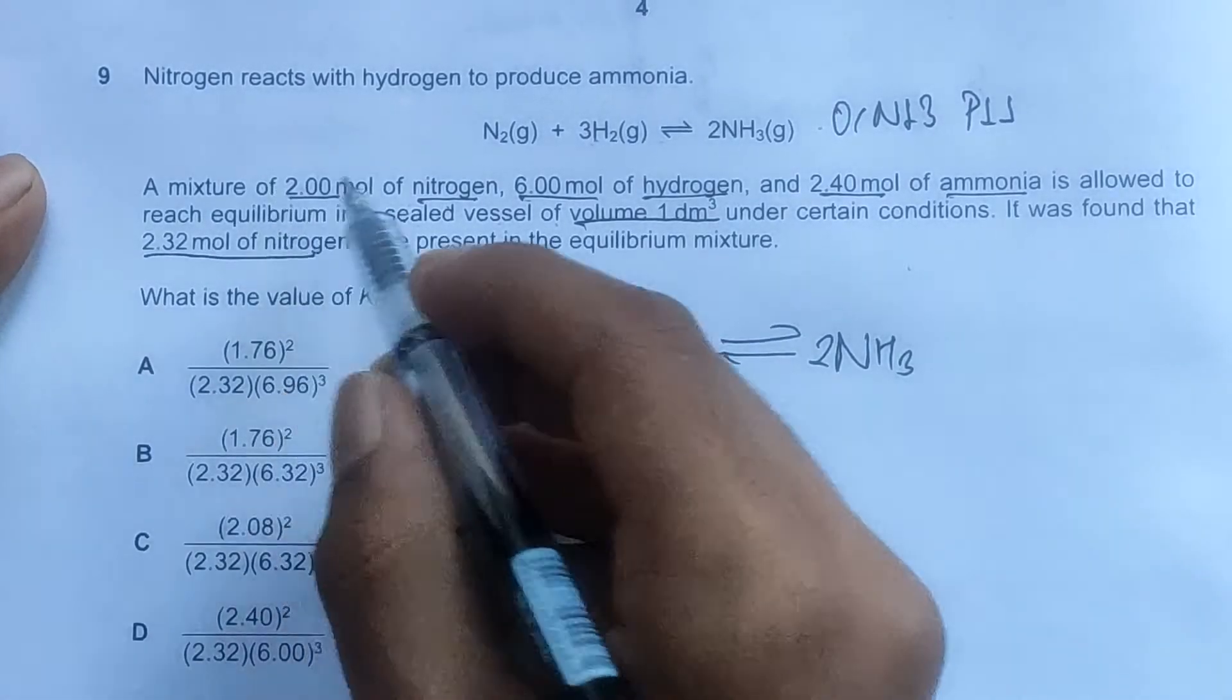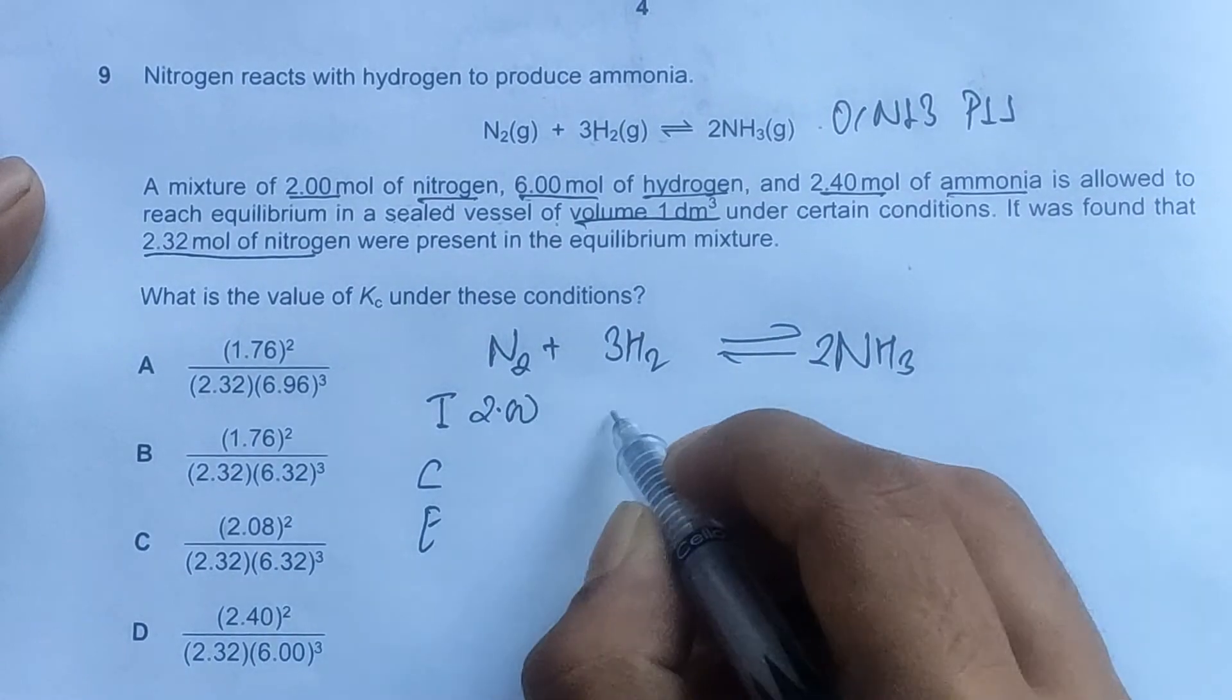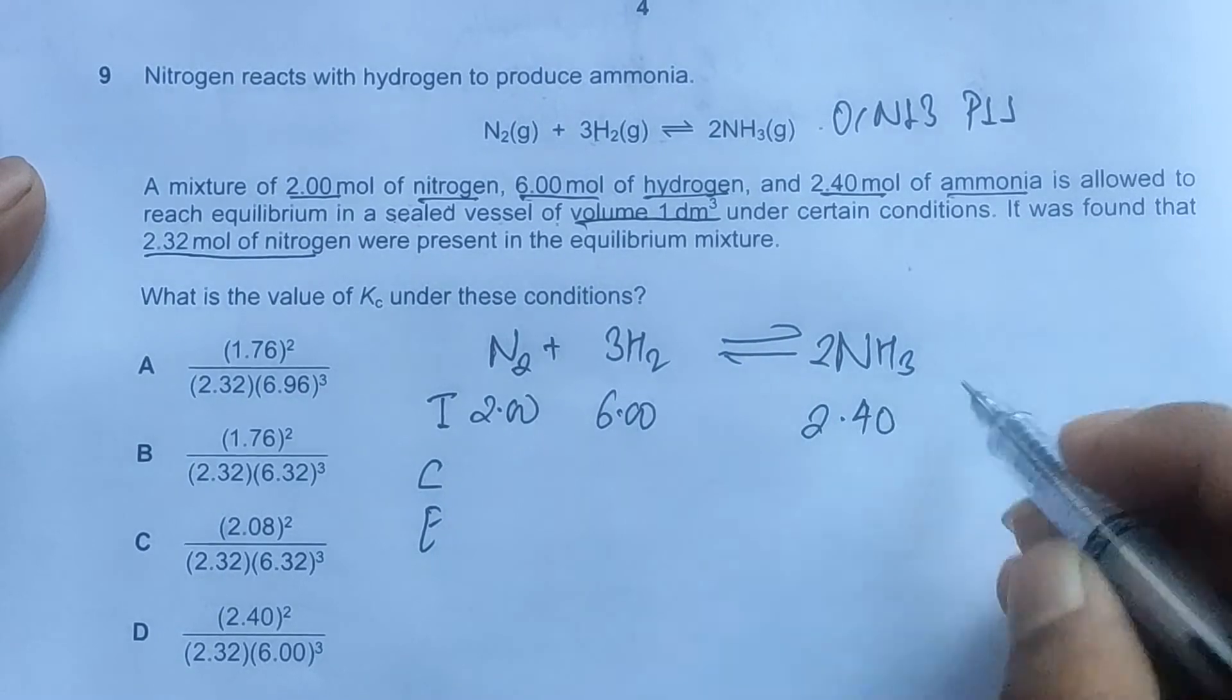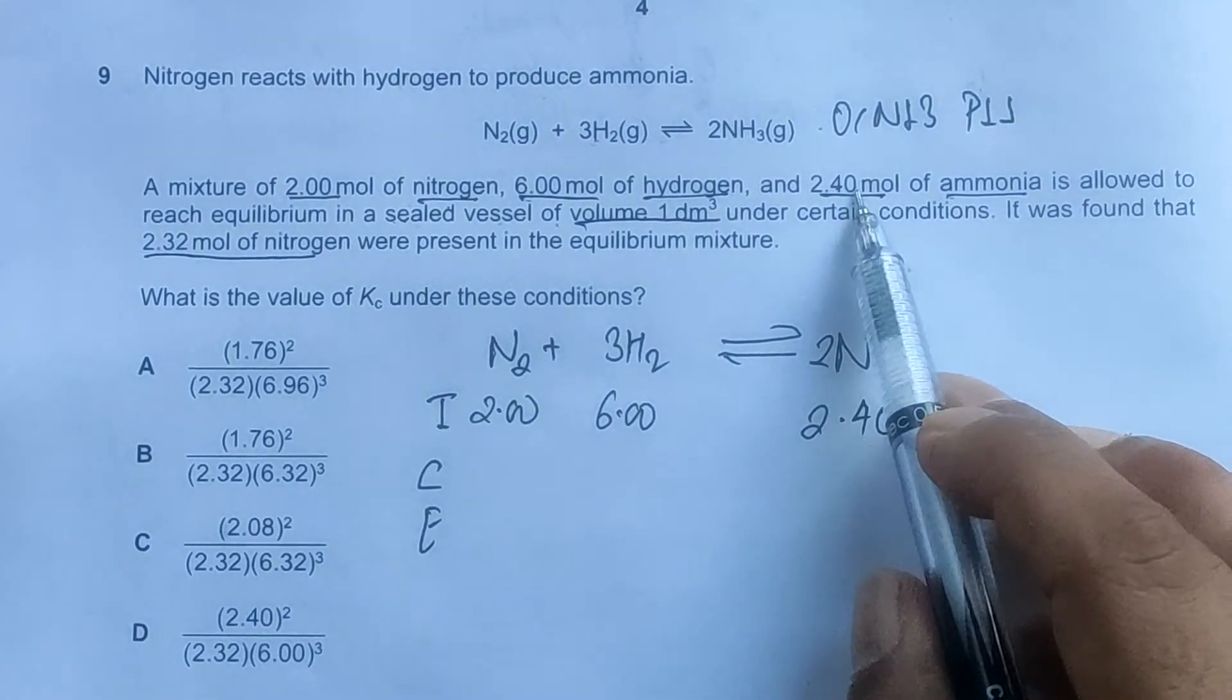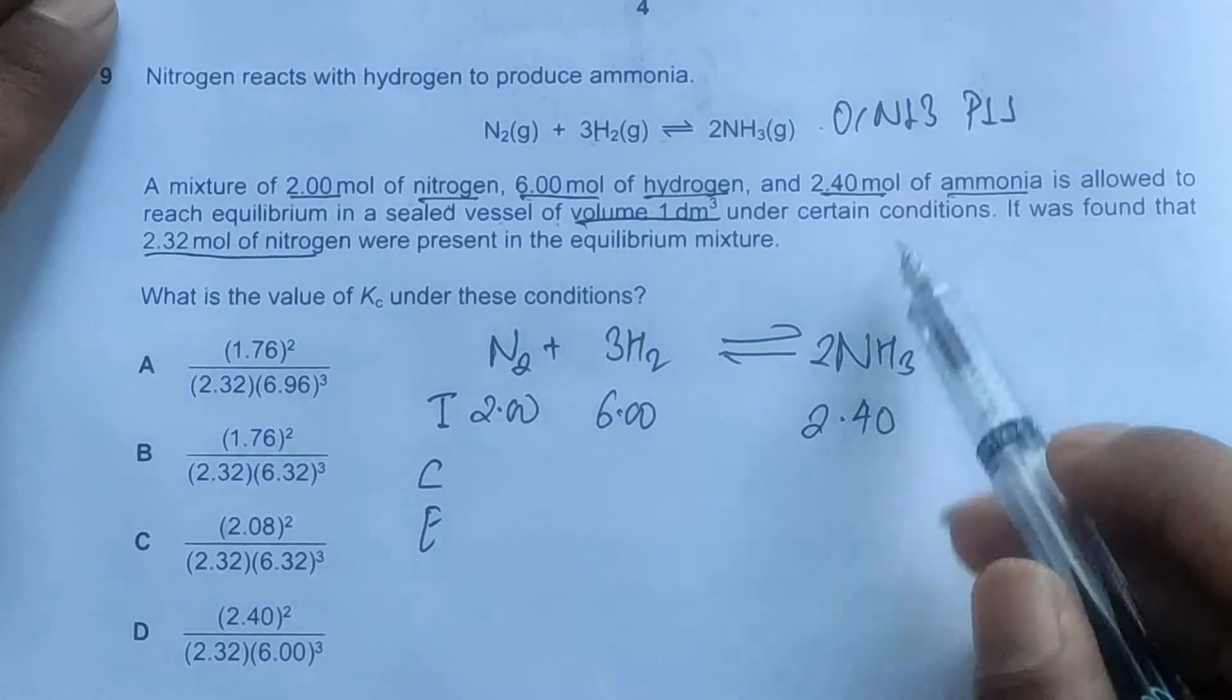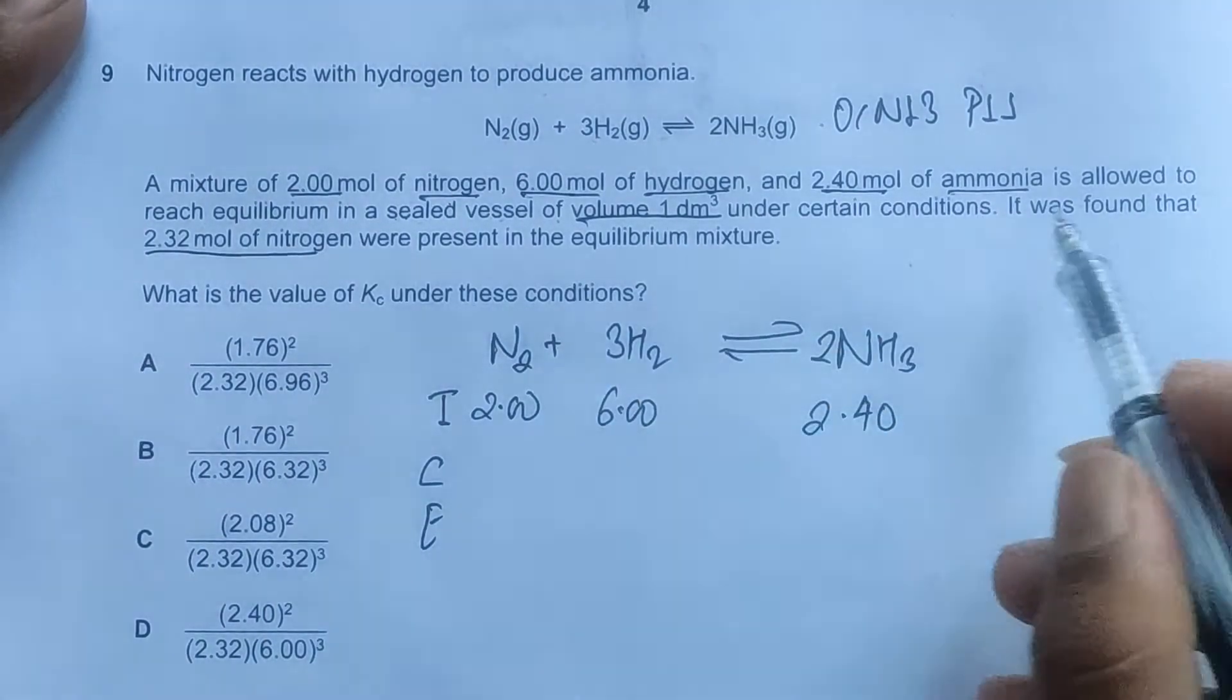Initially we have 2 moles of nitrogen, 6 moles of hydrogen, and we have also been given 2.4 moles of ammonia. Most of the time, if this wouldn't have been given, we would write zero, but as this has been given, we can't exclude this.